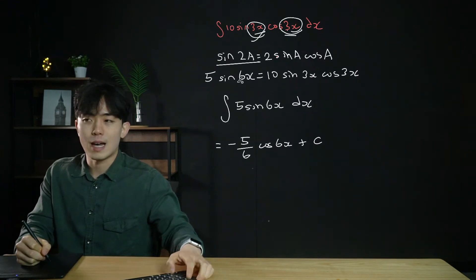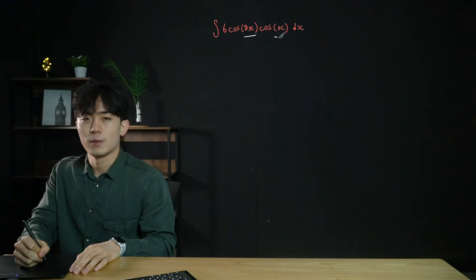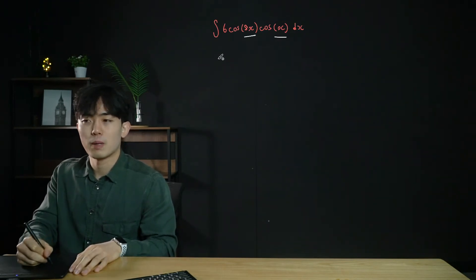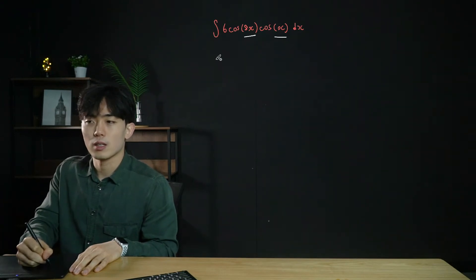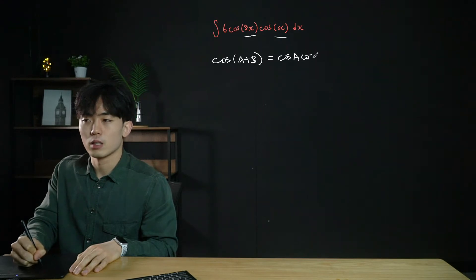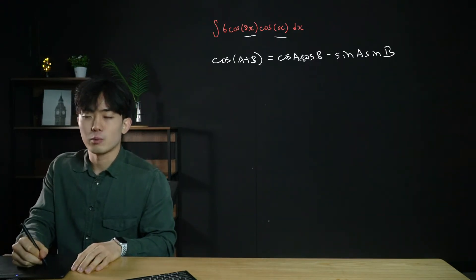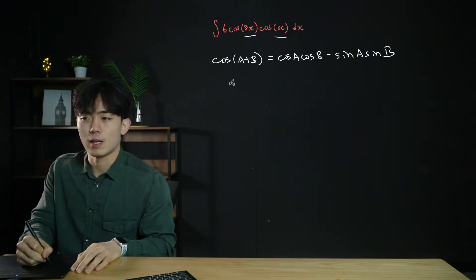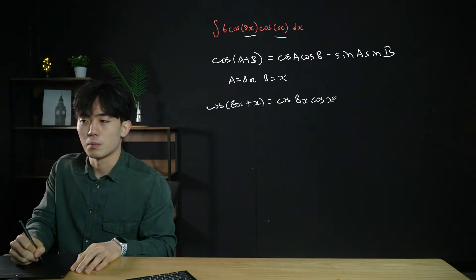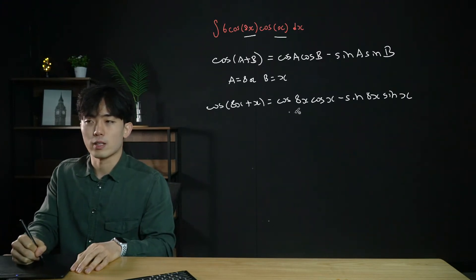When the angles are the same we can use the sin 2a formula. But when the angles differ — for example if we have cos(8x)cos(x) — we can't use sin 2a but we can use a compound angle formula. We know cos(a + b) equals cos a cos b minus sin a sin b. Setting a = 8x and b = x: cos(9x) equals cos(8x)cos(x) minus sin(8x)sin(x).